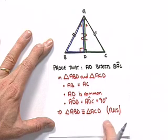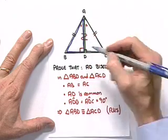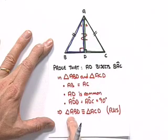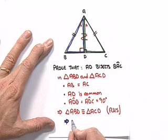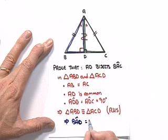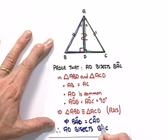We proved these two triangles are equal for a reason. We wanted to show that BAD was equal to CAD. If we look here, we see that that's angle A and angle A. In other words, this implies that angle BAD is equal to angle CAD, and therefore AD bisects BAC.